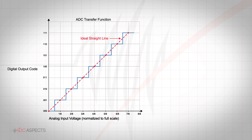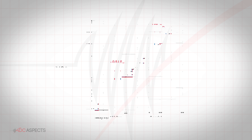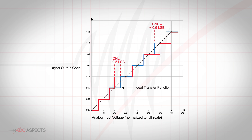Ideally, any two adjacent digital codes correspond to input analog voltages that are exactly one LSB apart. DNL error is the measure of the maximum deviation between actual steps and the ideal steps. This can be observed on the ADC transfer function as uneven spacing of the code steps. The presented figure shows areas where the DNL error is negative half LSB and positive half LSB.